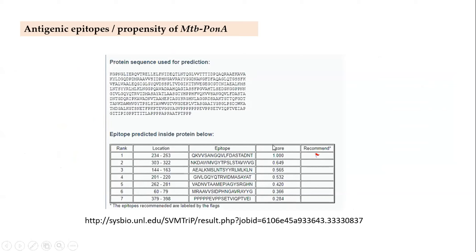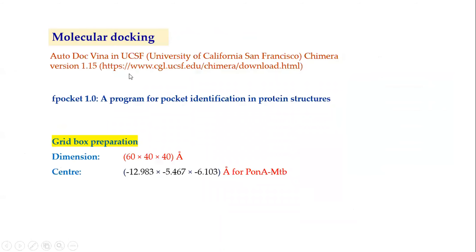For the molecular docking study, structural preparation was done for both ligands and protein before docking, using UCSF Chimera. Thereafter, we identified the binding pocket using the Pocket 1.0 server—a program for pocket identification in protein structure preparation. A grid with dimensions of 16×14×40 Ångströms was prepared, with the center derived from the pocket of the Mycobacterium tuberculosis PonA1 protein.